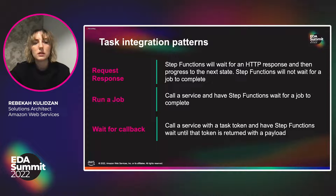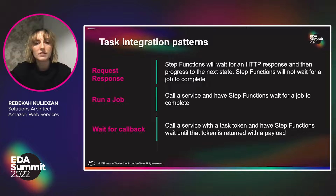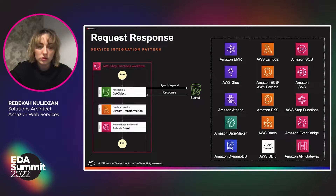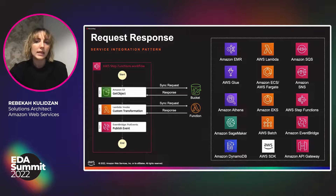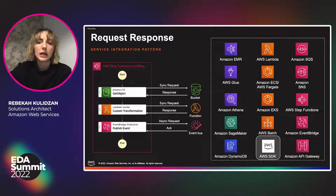The different request patterns: first, the request-response model — Step Functions waits for an HTTP response and then progresses to the next state, but does not wait for a job to complete. The second is 'run a job' — call a service and have Step Functions wait for a job to complete. The last is 'wait for a callback' — call a service with a task token and have Step Functions wait until that token is returned with a payload. For the first pattern, you start with a synchronous response to an S3 bucket, that response is sent to Lambda to process with a custom transformation, and then an asynchronous request to EventBridge to get acknowledgement and complete the workflow.